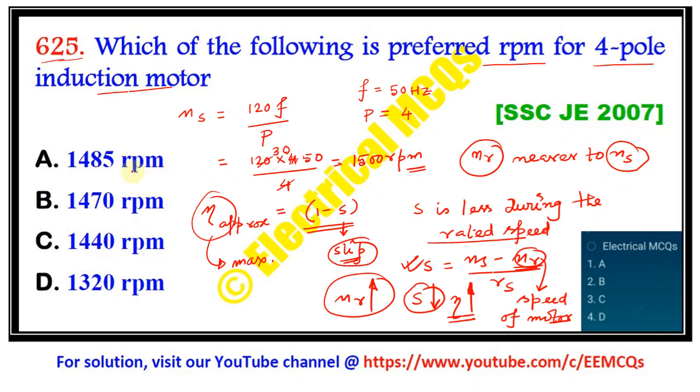And here for the four options given, 1485 is most near the synchronous speed that is 1500 RPM. So option A here is the correct answer. I think all of you understood.